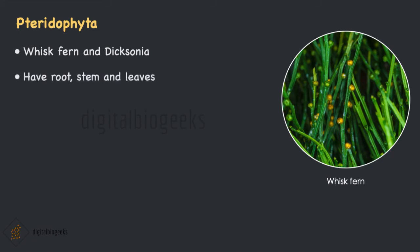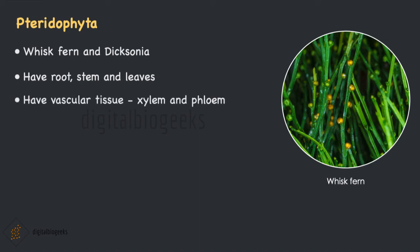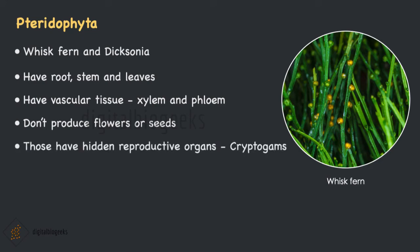Here you can see examples of Pteridophyta. Plants in this group have differentiated body parts like roots, stem and leaves. They have vascular tissue — the xylem and phloem — for the conduction of water and food to different parts of the body, unlike Bryophyta which lacks vascular tissue. They don't produce flowers or seeds, which are features for reproduction in plants, and that's why they are called cryptogams, meaning they have hidden reproductive organs.